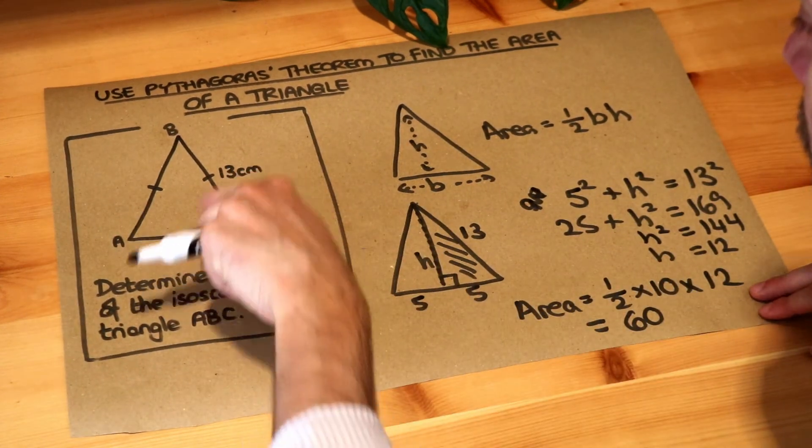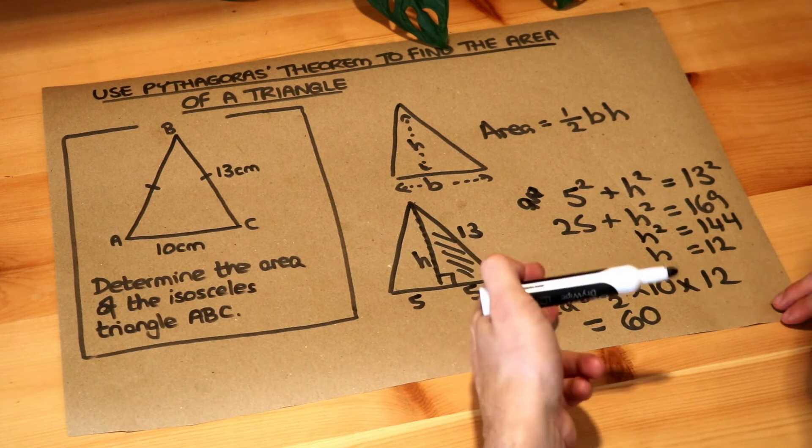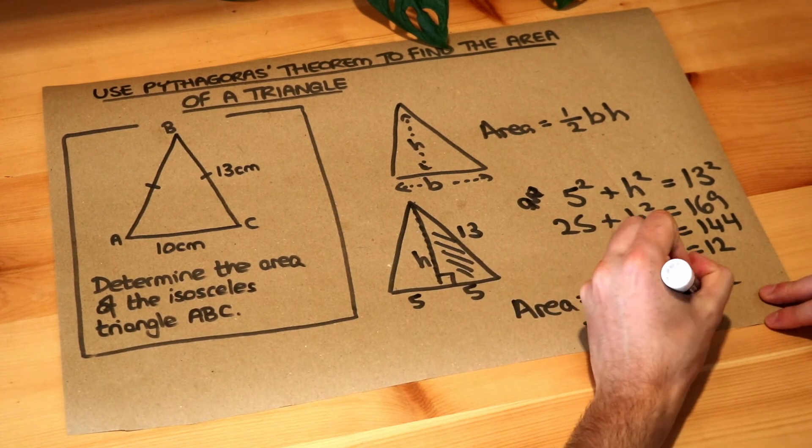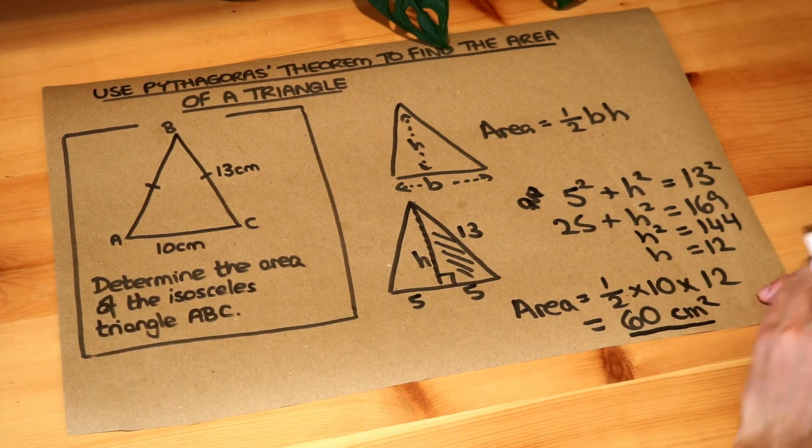The original units were in centimeters, so the unit of area will be centimeters squared, and that is the final answer.